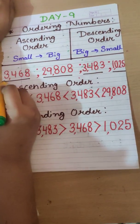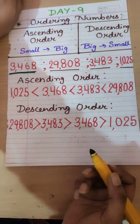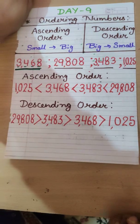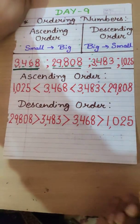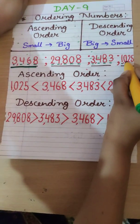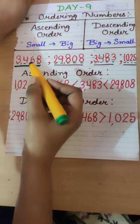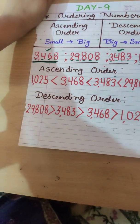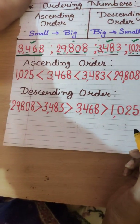So here, for our first number we will first see the number of digits. 3,468 has four digits. 29,808 has five digits. 3,483 has four digits. And 1,025 also has four digits. So we can see these three numbers have four digits, and this number has five digits.